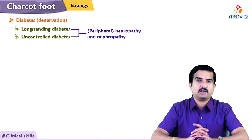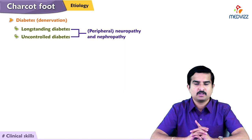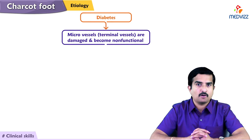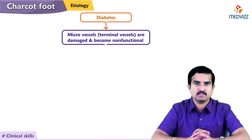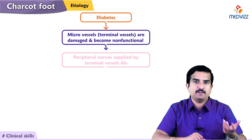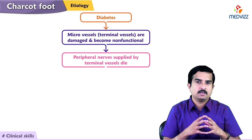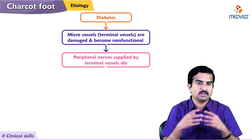Diabetes is called a microvascular disease, meaning the terminal blood vessels — the microvessels — are damaged and become non-functional. When these microvessels at the limbs become non-functional, whatever structures they supply, especially in the periphery, will be denervated. Blood supply to the terminal nerves is compromised, so the nerves are effectively dead at that location.